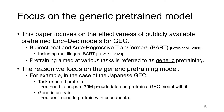In this study, we determined the effectiveness of publicly available pre-trained encoder-decoder models for GEC. Specifically, we investigate pre-trained models without the need for pseudo-data. We explore the pre-trained model BART — Bidirectional and Auto-Regressive Transformers. In this paper, pre-training aimed at various tasks is referred to as generic pre-training, as opposed to task-oriented pre-training.